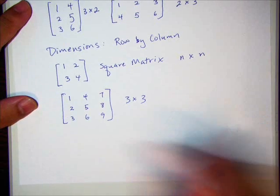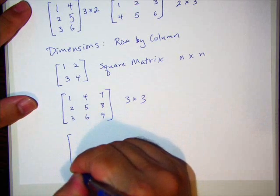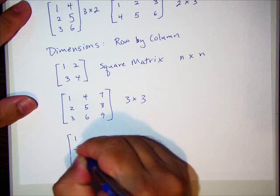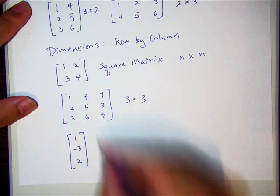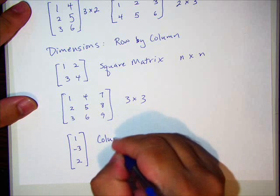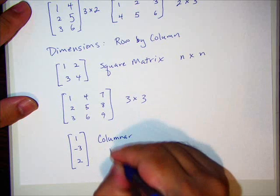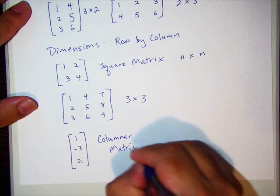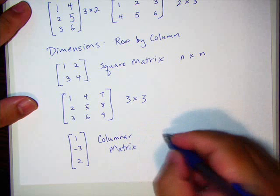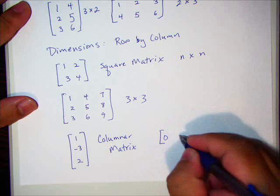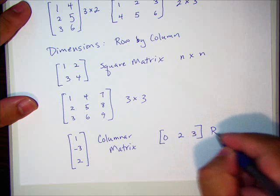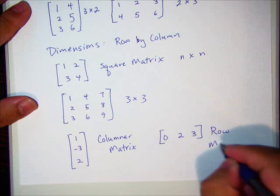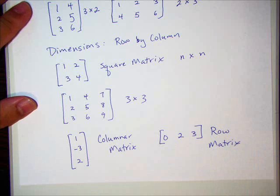Other special types of matrices. I've been putting these in order, but they don't have to be in order. Here, this is a columnar matrix because it's just one column. We also have a row matrix because it's one row.